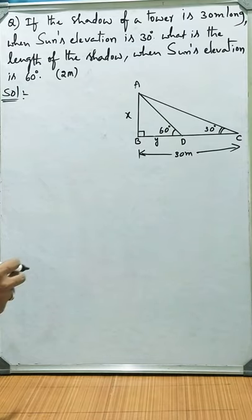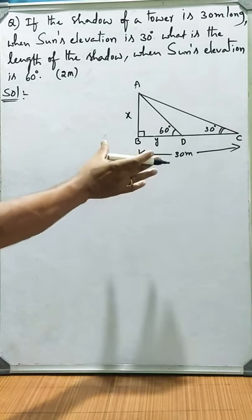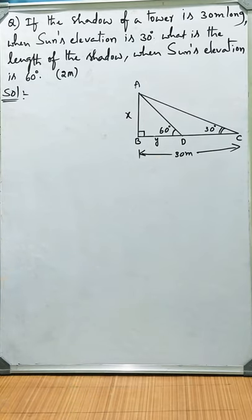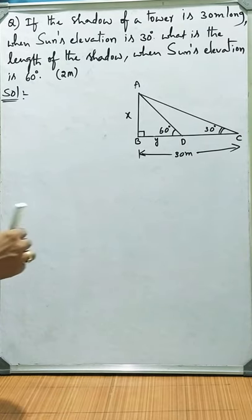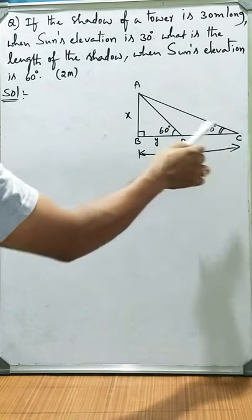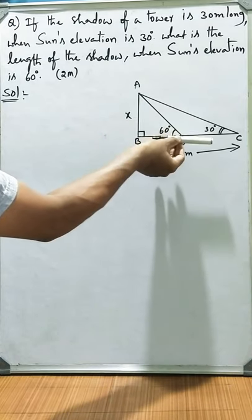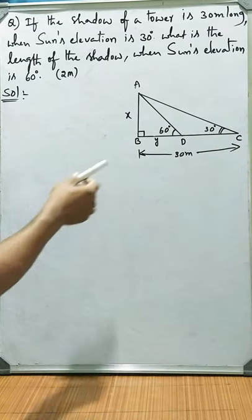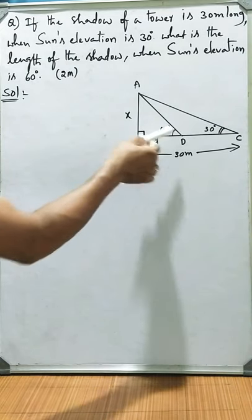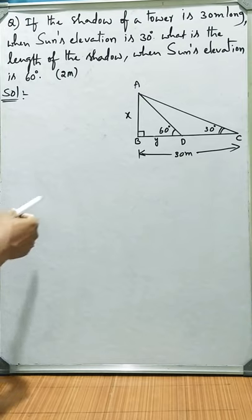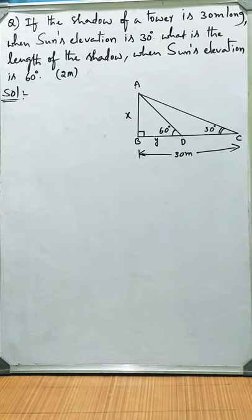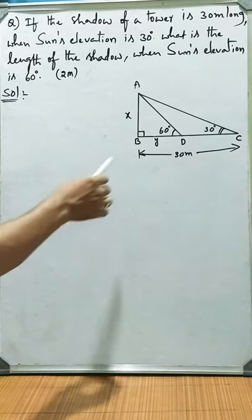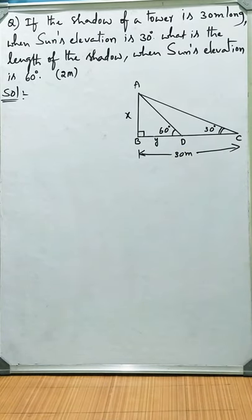See here, look at the figure I have drawn which is apt to the given data. AB is the height of the tower. I have taken as some x meters. BC is the shadow of the tower when the sun's elevation is 30 degrees, and BD is the shadow when the sun's elevation is 60 degrees. BC is given as 30 meters.